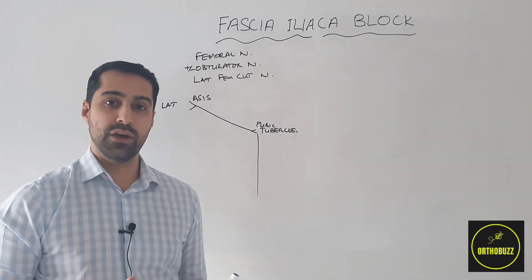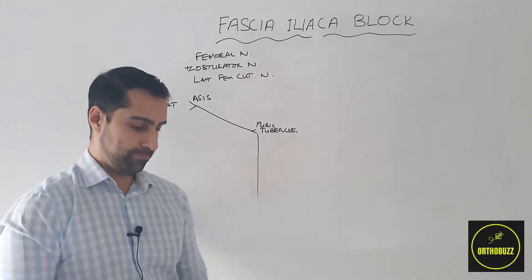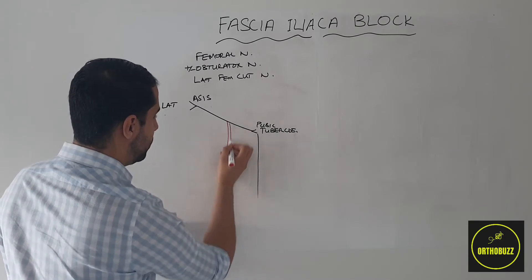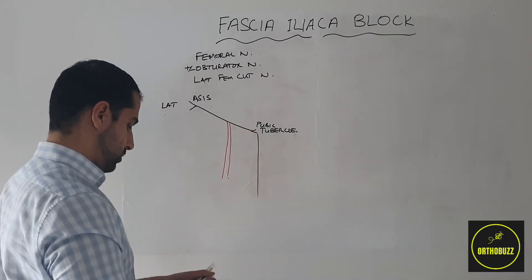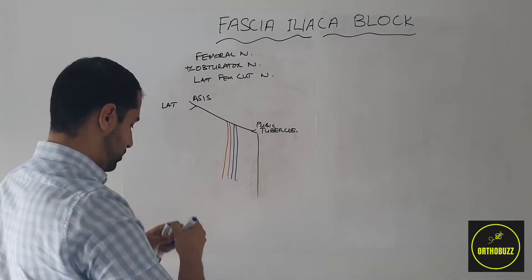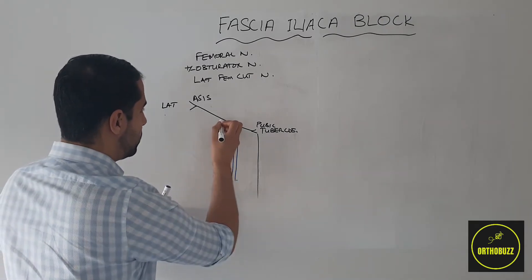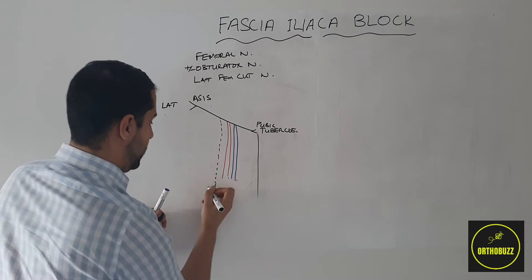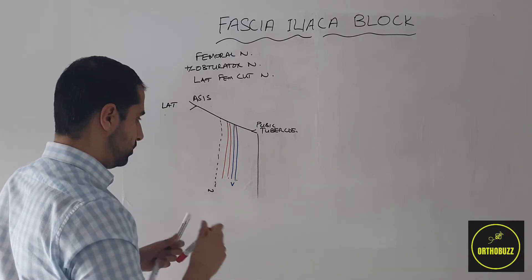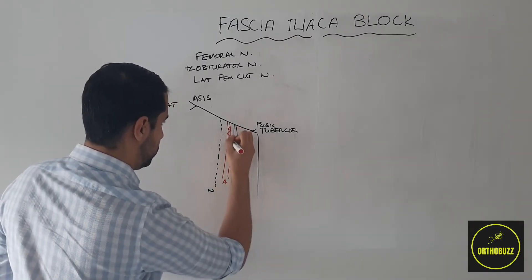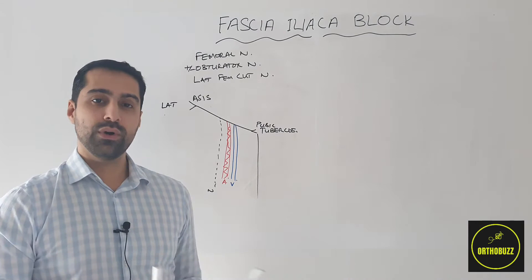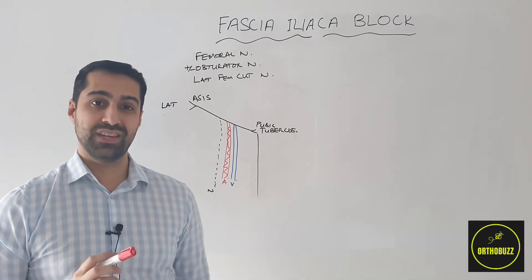We want to target the nerves and avoid the vascular structures running in this area. We have our femoral artery, we have our femoral vein, and we have the nerve running more laterally. We want to administer our injection to avoid these vascular structures, and so the safest place to do this is laterally to them.